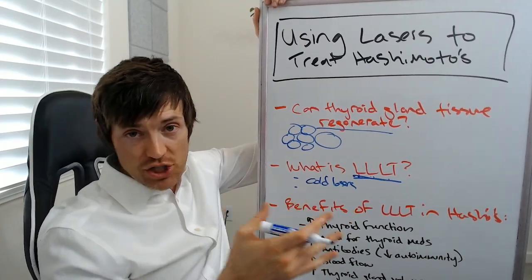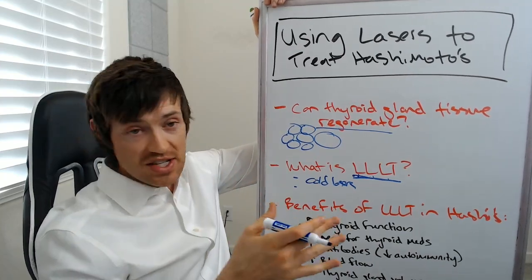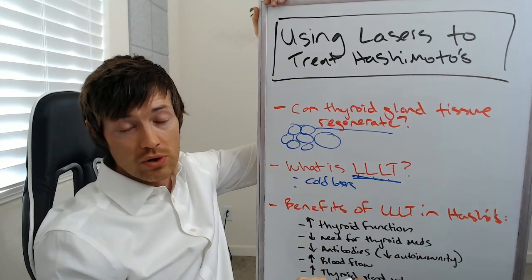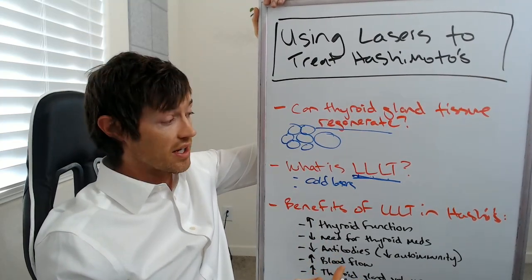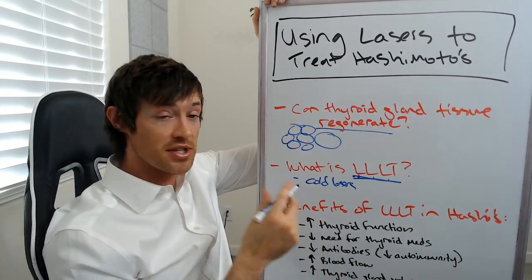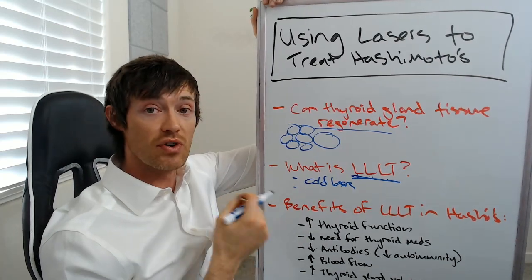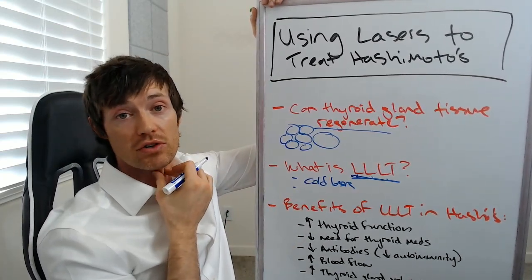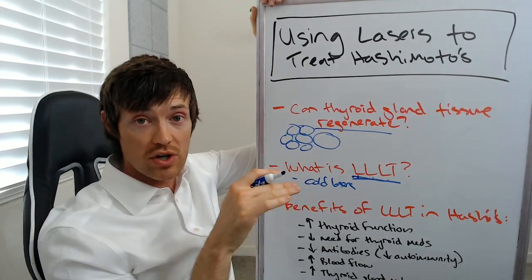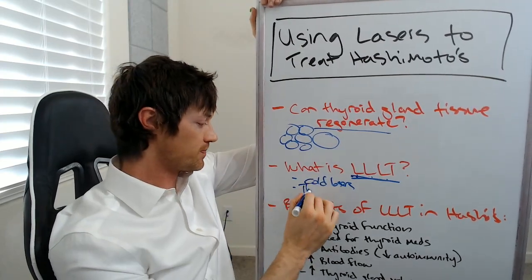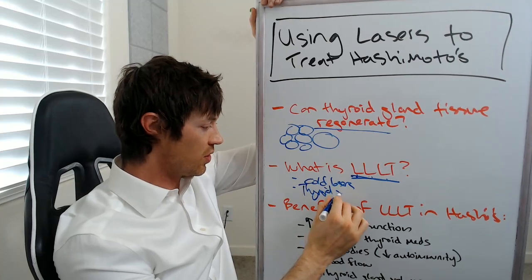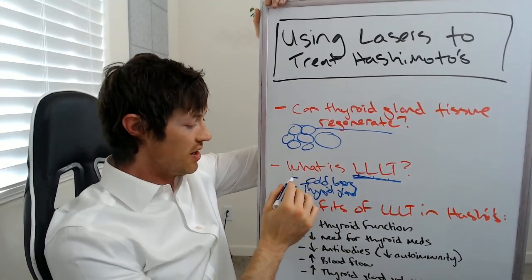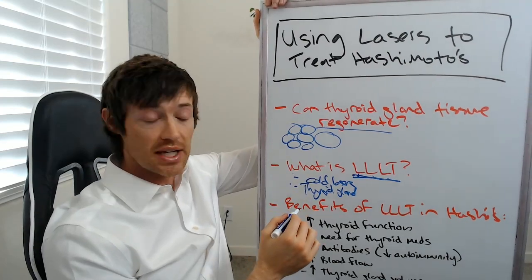It can't go through bone or lots of other dense organs, but it can potentially get to the thyroid gland because it's very superficial. If you think about it, there's not a lot of fat up in that area of your neck, which means the laser can actually penetrate through and reach the thyroid gland. So the reason this potentially works is because we're using a cold laser and it doesn't have to go very deep to get there.